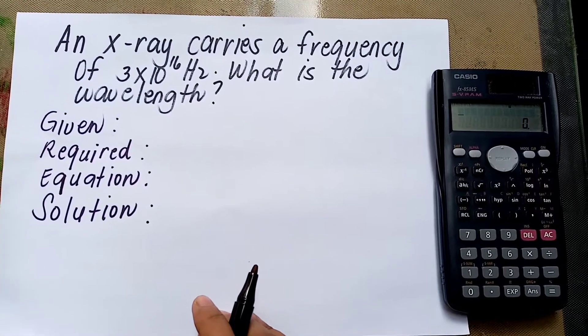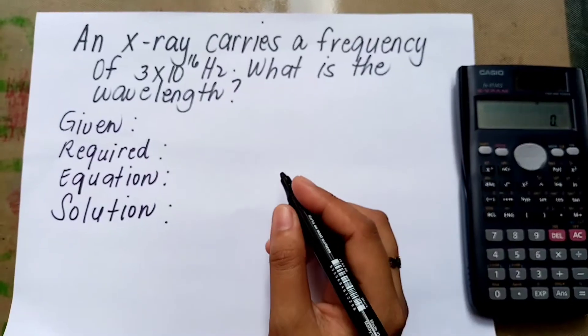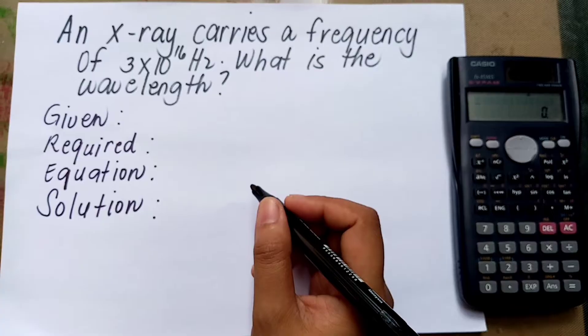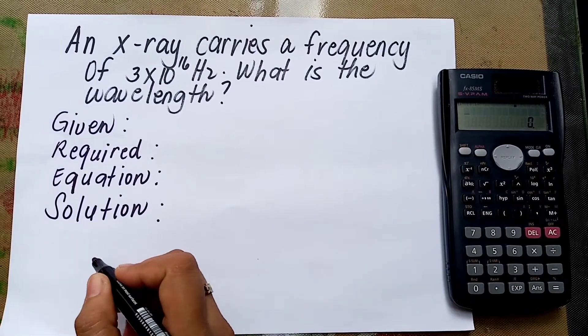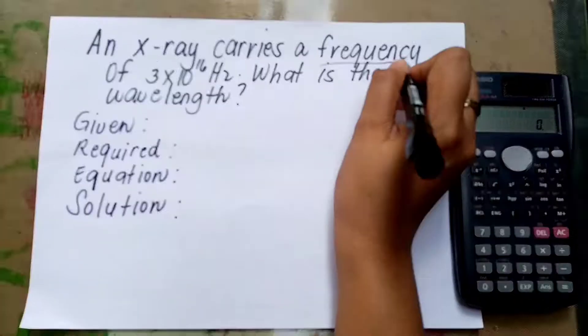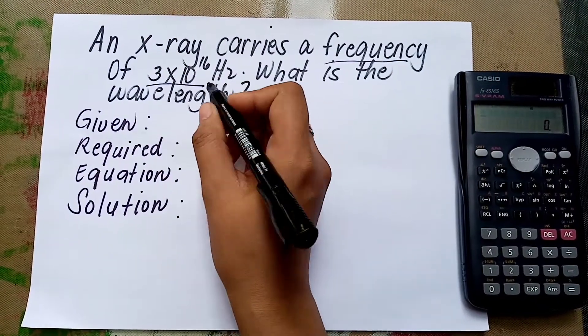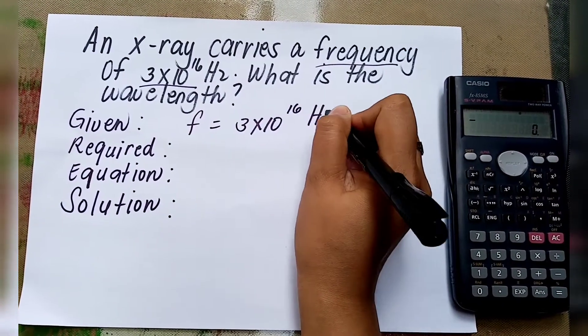An X-ray carries a frequency of 3 times 10 to the 16 Hertz. What is the wavelength? In solving this problem, we need to identify the given. What is given is the frequency, which is 3 times 10 to the 16 Hertz.